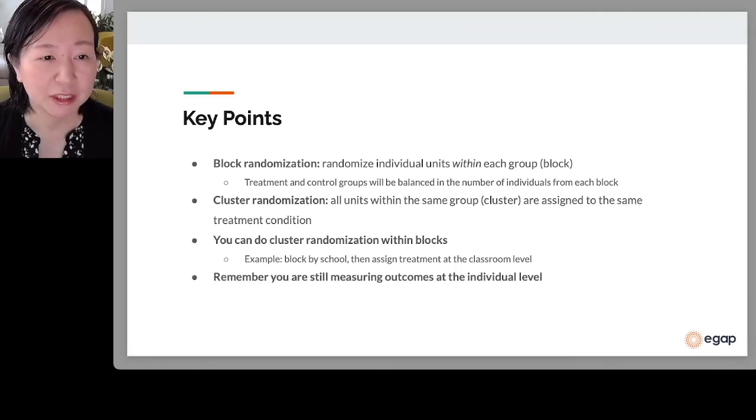So to summarize, the key points are: one, block randomization is when we randomize individual units within each group, where the groups are known as blocks, so that treatment and control groups will be balanced in the number of individuals from each block.